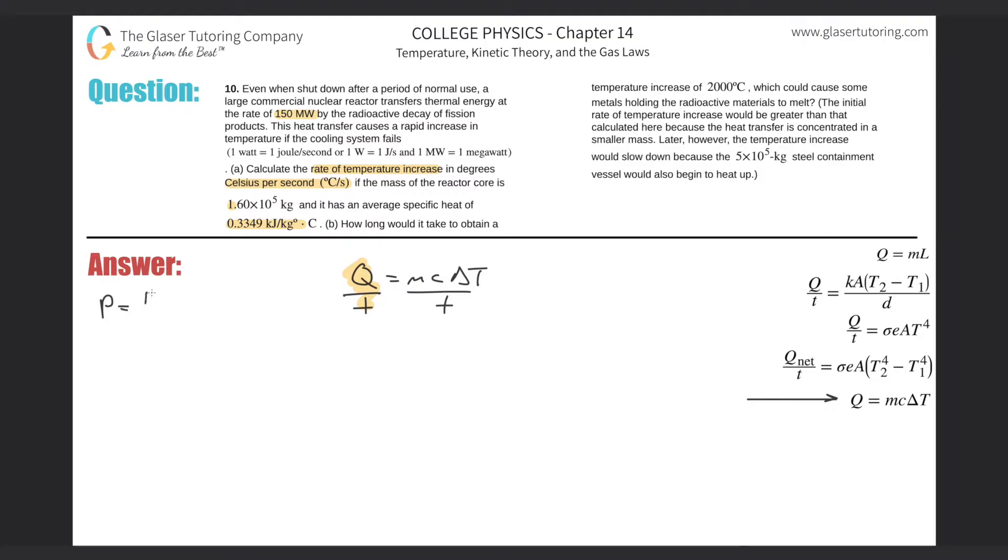Recall that power is equal to energy over time. Now, I know that it's Q here. The only reason why it's Q is because it's heat energy. But energy is energy. So, I mean, there's different forms of energy. So in this particular case, we can now call this power is now equal to mass times specific heat times change in temperature, all divided by the time. Now, what we are after, again, we are after calculating the temperature increase in degrees Celsius per second.